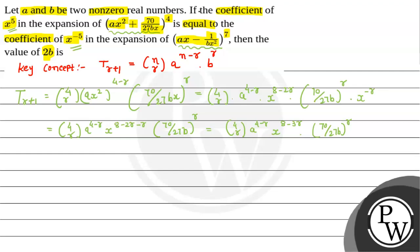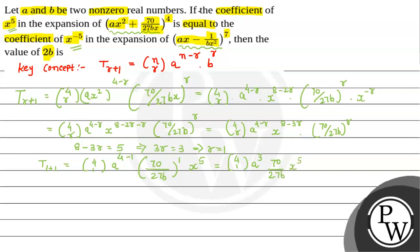Here we need x raised to 5, so we set 8 − 3r = 5, which gives 3r = 3, so r = 1. Putting r = 1, t2 = 4C1 × a^(4−1) × (70/27b)^1 × x^5. That equals 4C1 × a³ × (70/27b) × x^5. This will be our Equation 1.